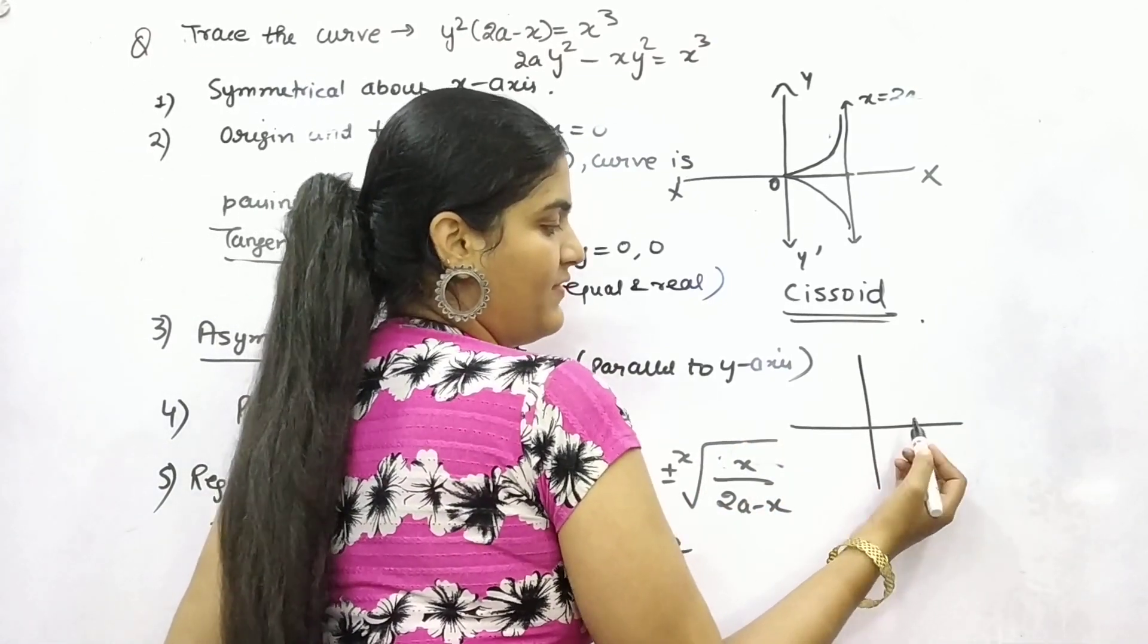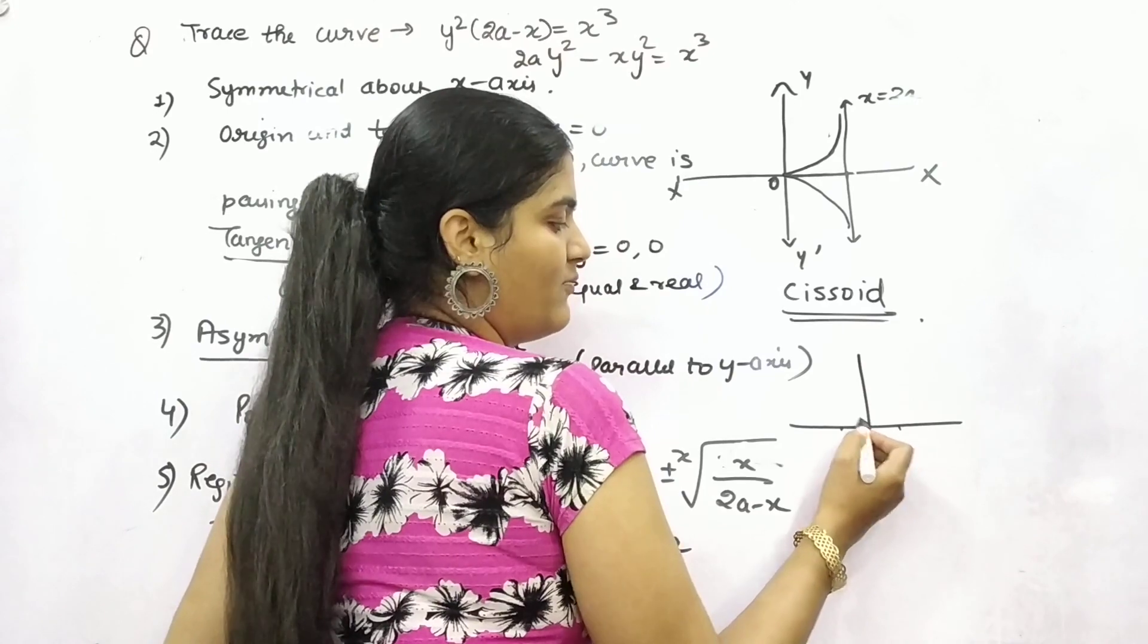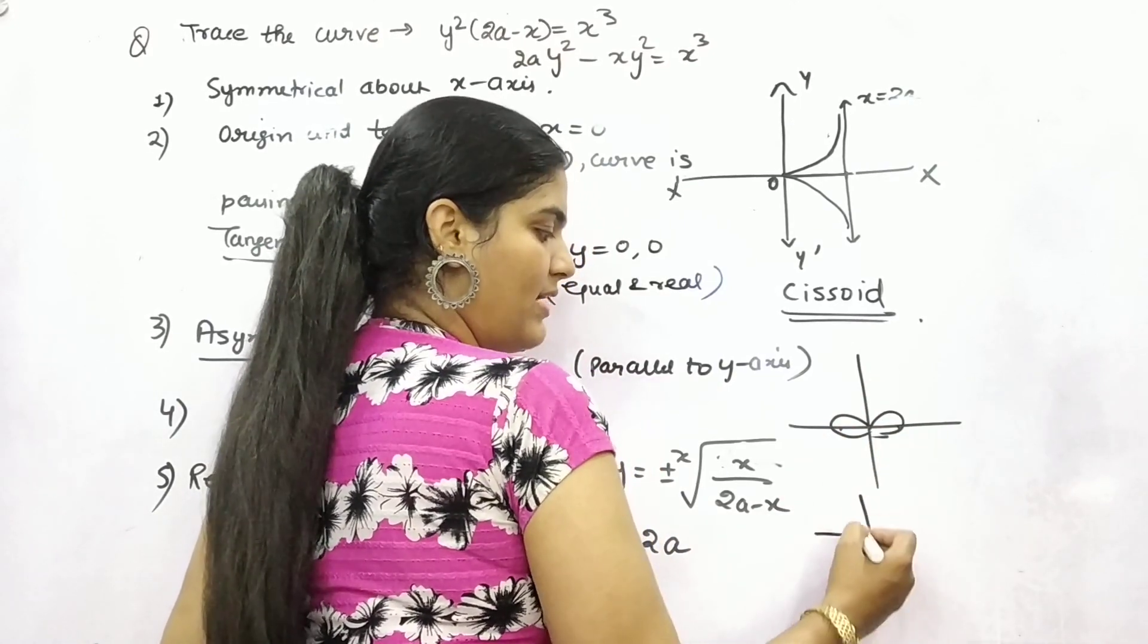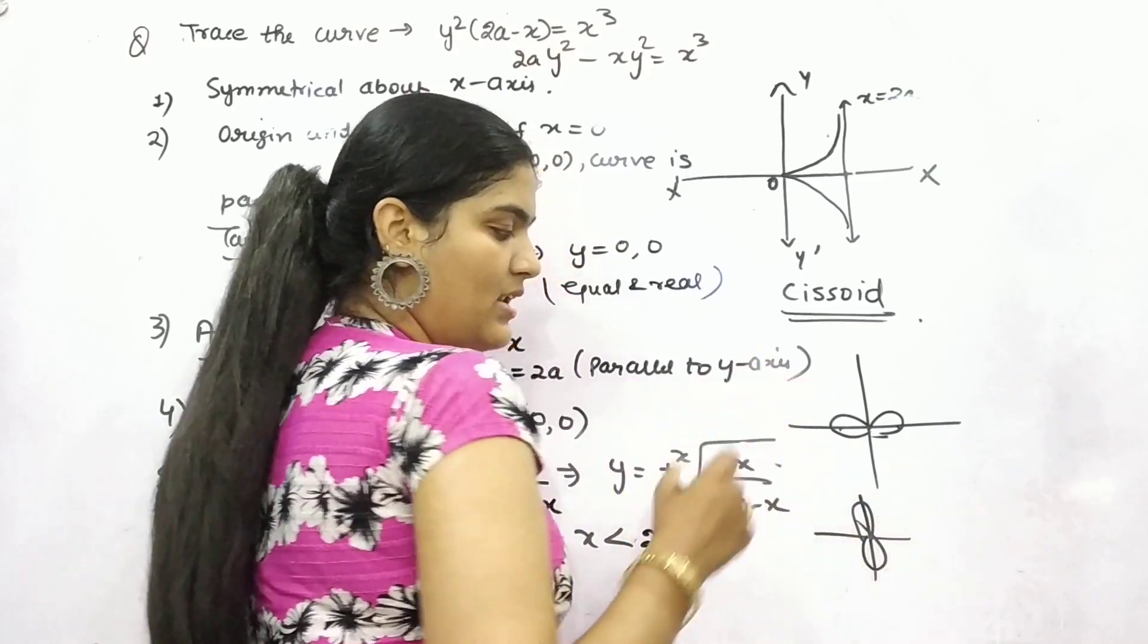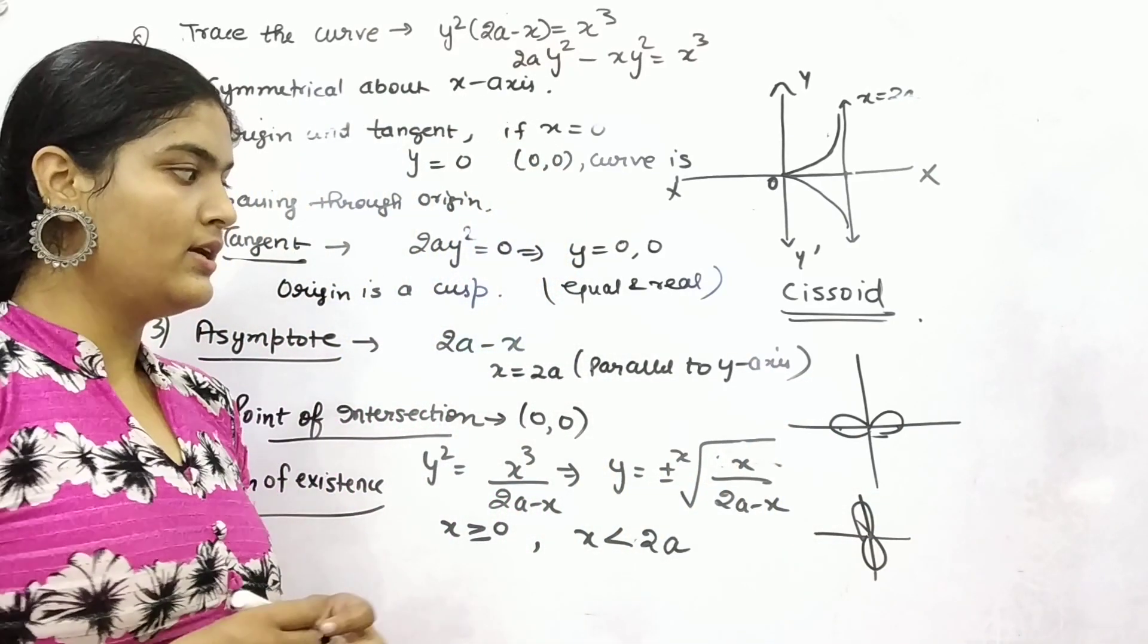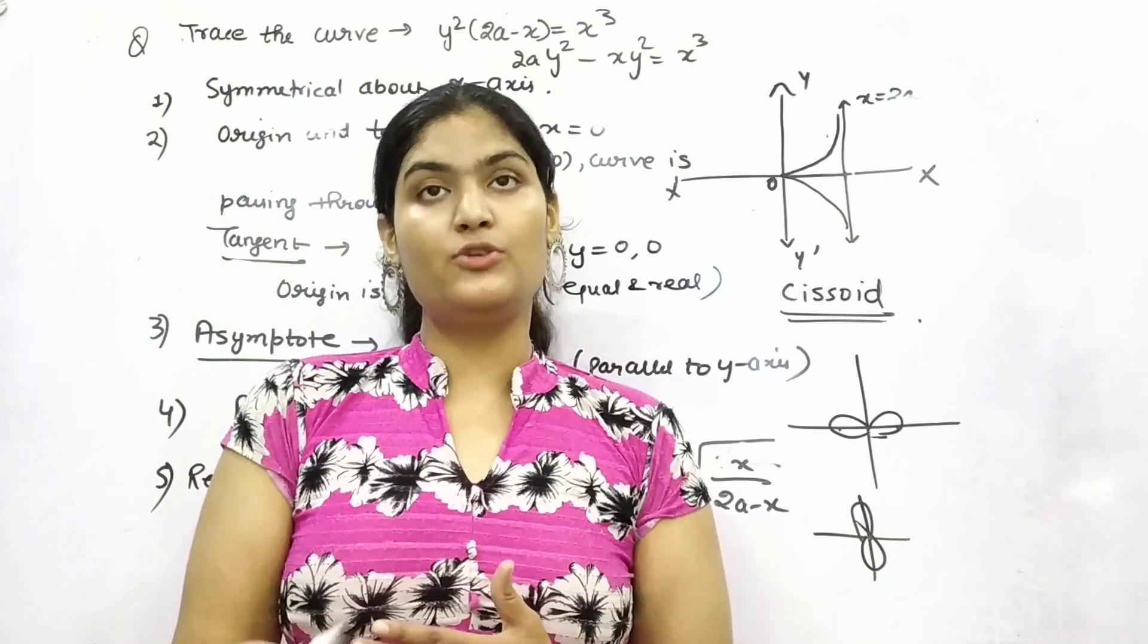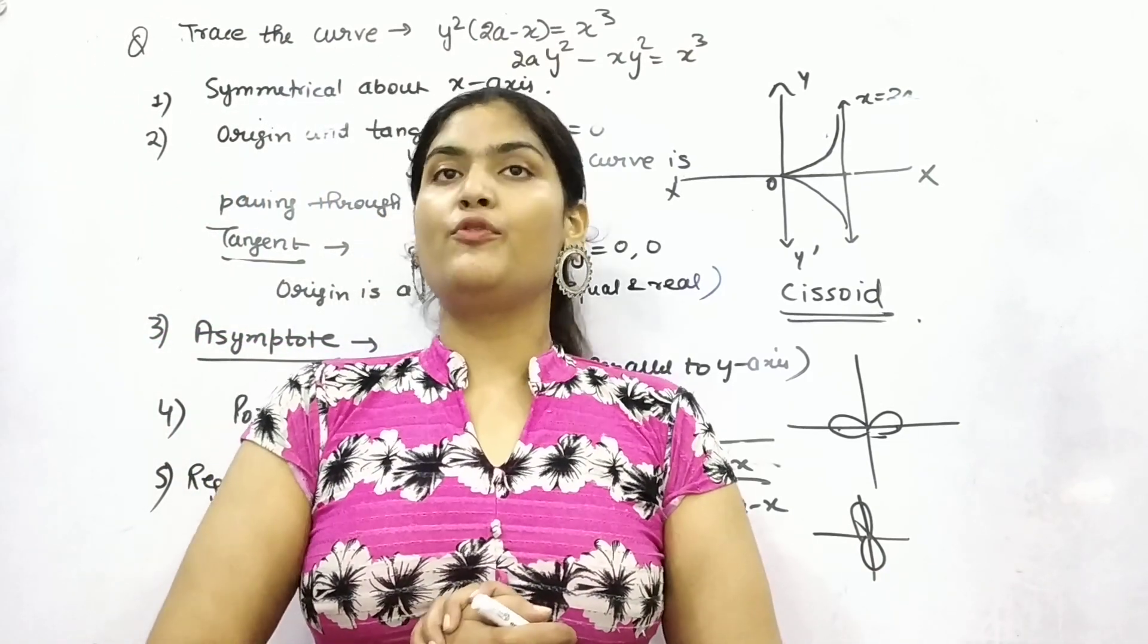Then in that case, you will have some sort of graph, like if it is x = 2a, somewhat like this. Or if it is symmetrical about y, it is somewhat like this. So try to make different graphs and try to trace them up.